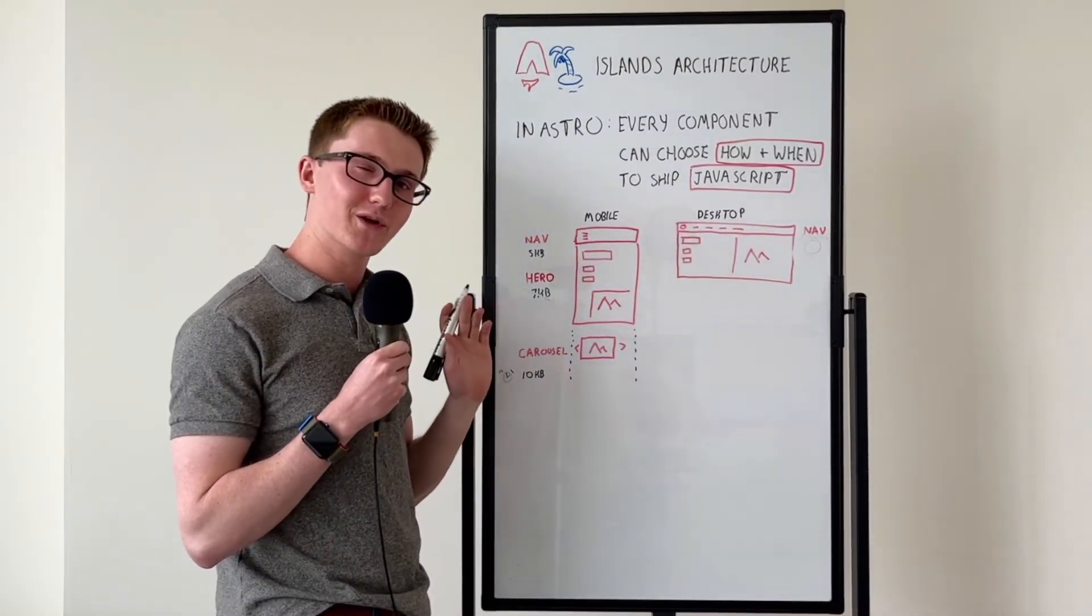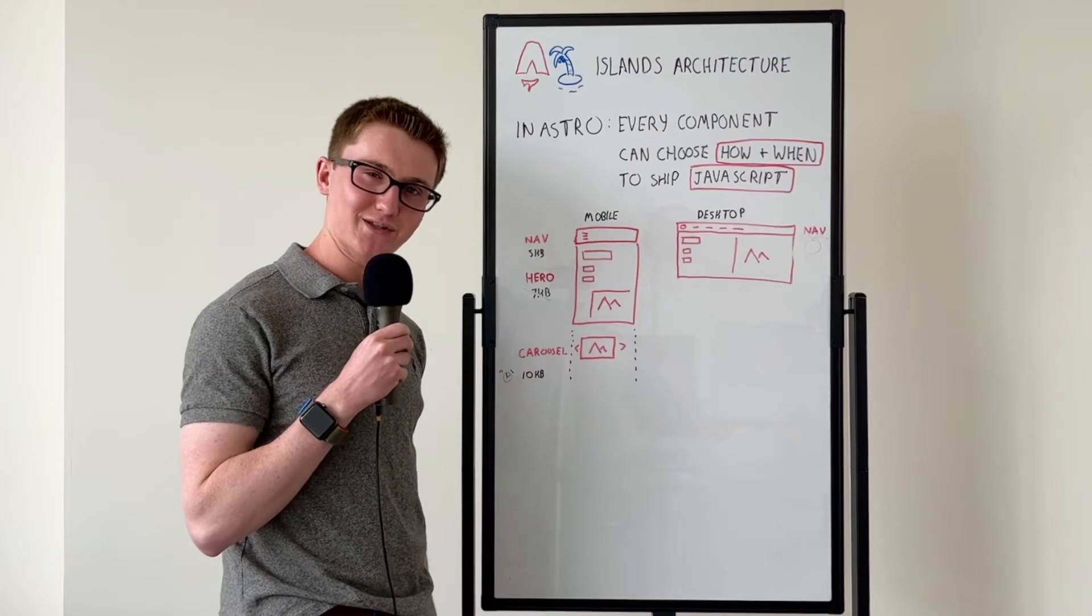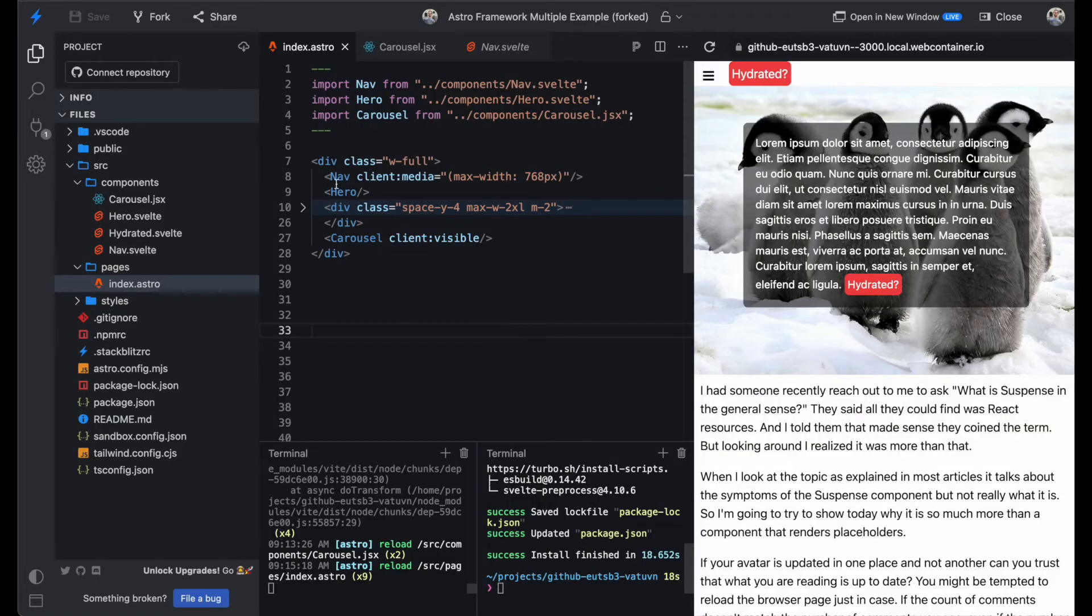So let's jump into a code example to see how this is possible. Thanks, Ben. Here we import our nav component with a client media directive, so it will only load JavaScript if the width is below this number of pixels. We also import our hero component with no client directive, and then we add the client visible directive to the carousel.